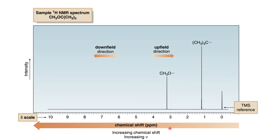The chemical shift on the x-axis gives the position of the NMR signals of various protons in a sample. The structure of tertiary butyl methyl ether contains three methyl groups attached on the carbon, and one methyl group attached with the oxygen.